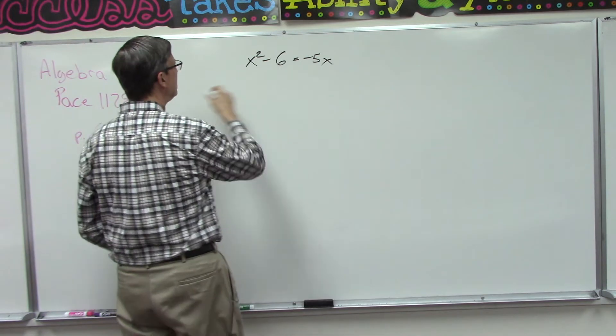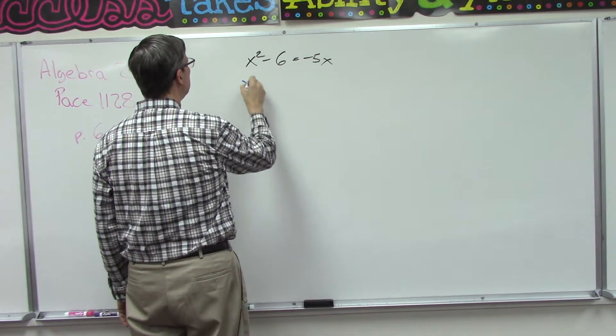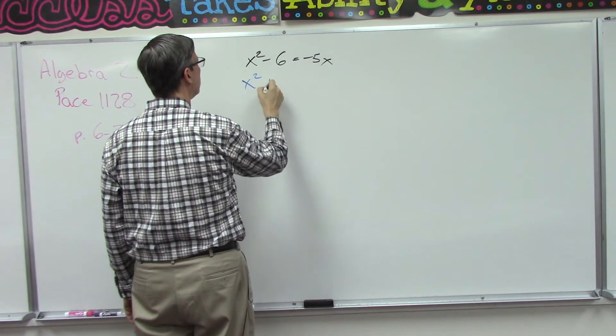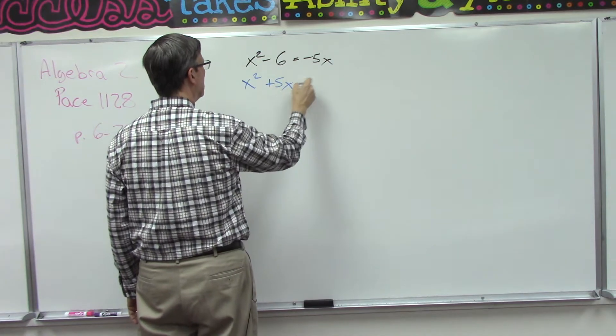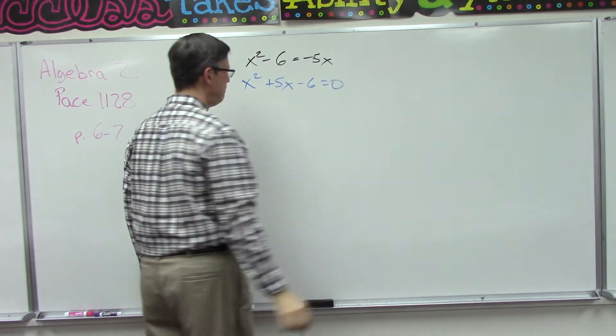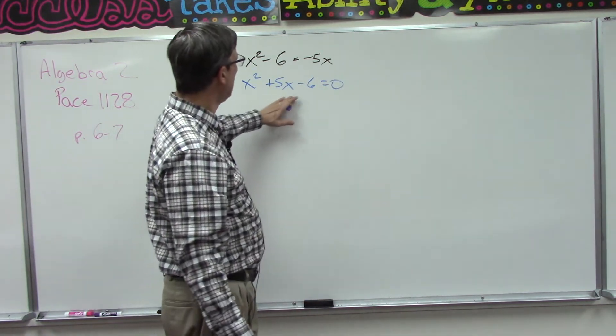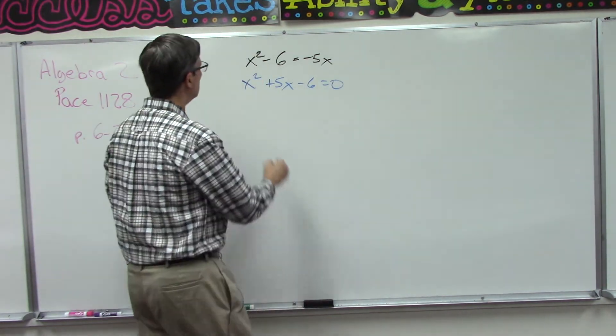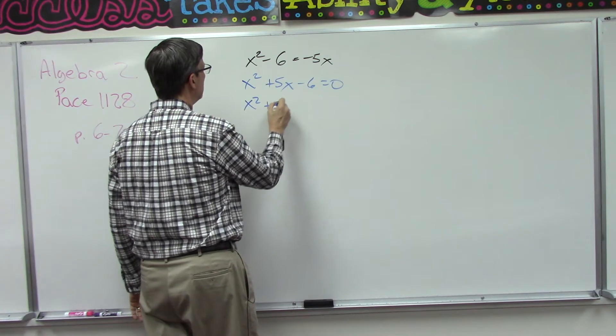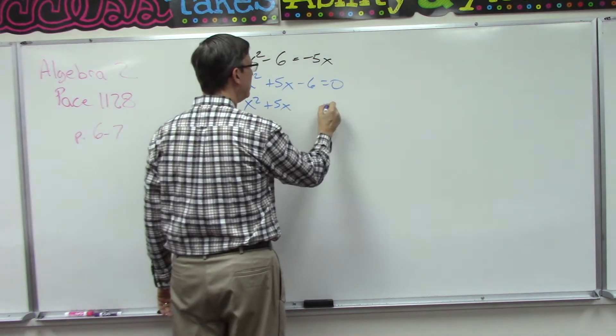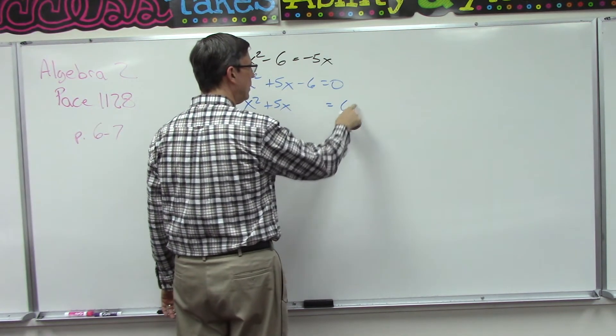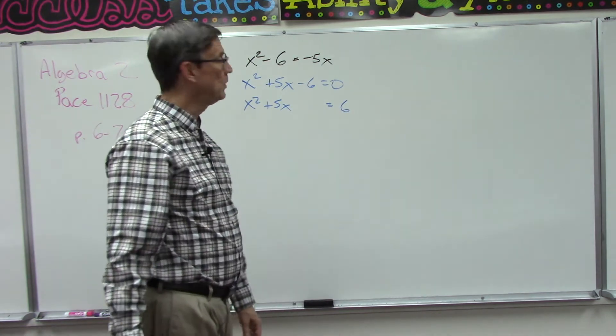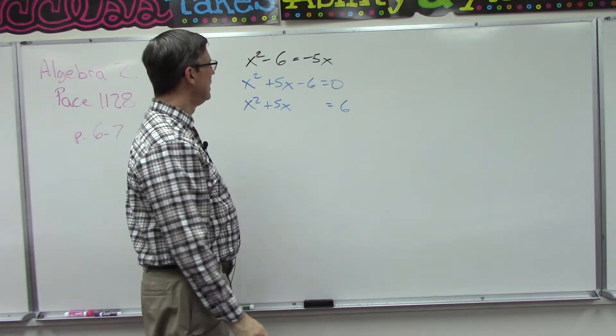Alright, first thing is we get everything on one side, so x squared plus 5x minus 6 equals 0. Then we actually want to take the 6 over to the other side, so we have x squared plus 5x, we leave a gap, and then when we take that over it becomes positive 6. We're adding 6 to both sides.